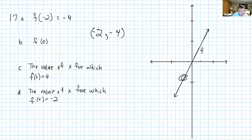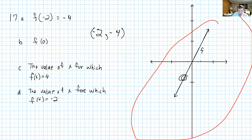Let's look at part b. It says f of 0. What point on this graph has an x value of 0? Well, this point right here. When x is 0, y is also 0. So f of 0 equals 0. So those are basically: given x, find y.